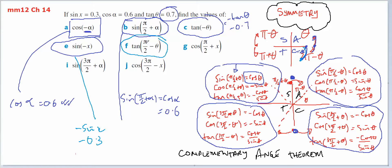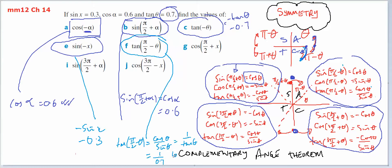Looking at f: tan of π/2 minus theta. π/2 minus theta is the first quadrant. Tan is going to be cos on sine. So we've got tan of π/2 minus theta is equal to cos of theta on sine of theta, which is 1 on tan of theta. So instead of 0.7, it's 1 over 0.7, or 10 on 7.